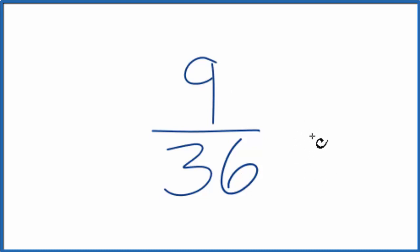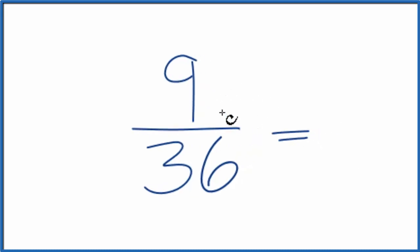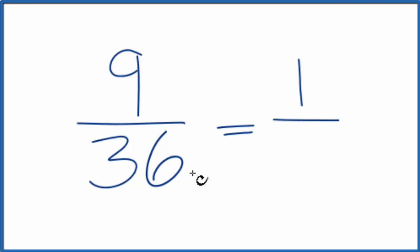We need to find the common multiple of both 9 and 36. I know that 9 goes into 36 four times, so I could just take and divide 9 by 9. 9 divided by 9, that's 1. 36 divided by 9, that gives me 4.